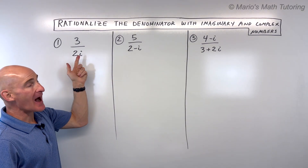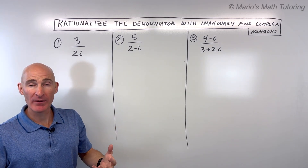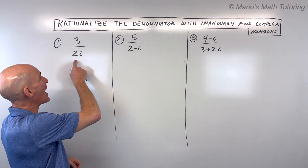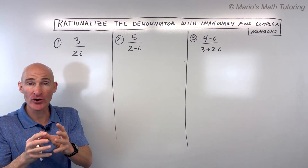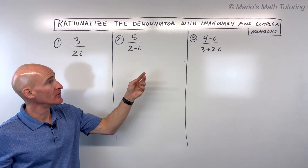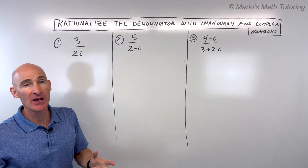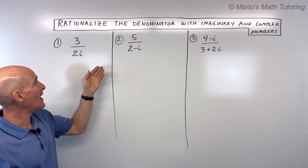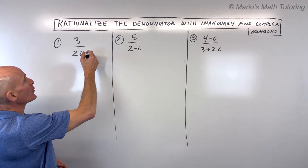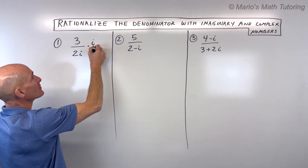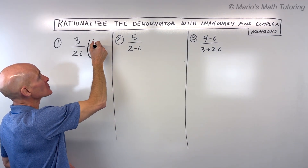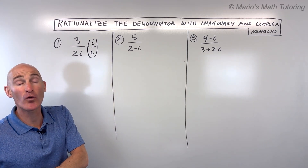We really don't want this i in the denominator — it's considered improper and we want to get rid of it. There are two different cases: there's the case where you just have a monomial, meaning one term or one group, and then there's the case where you have a binomial — two terms or two groups, separated by a plus or a minus sign. So two different approaches. When you have a monomial, you can multiply the numerator and denominator just by i over i, because anything divided by itself is one, so we're really not changing the value of the fraction — we're just going to change the form.